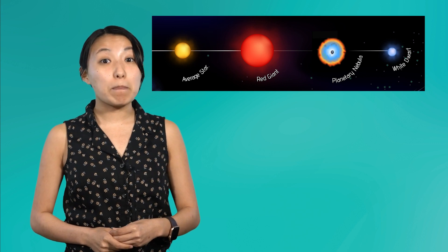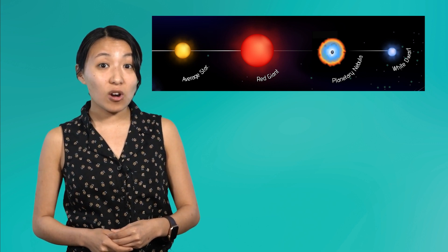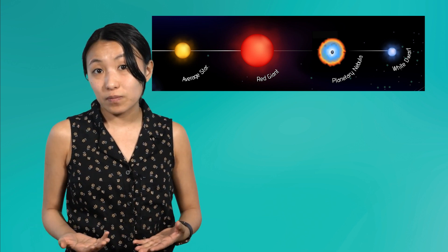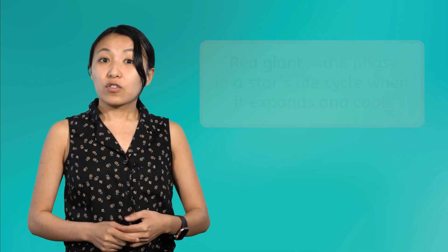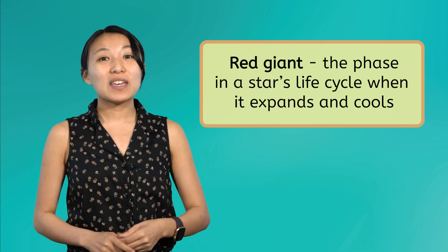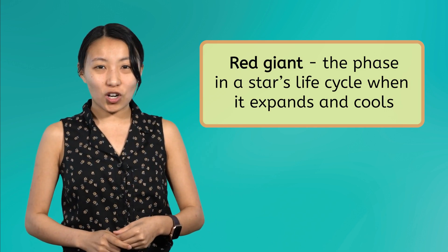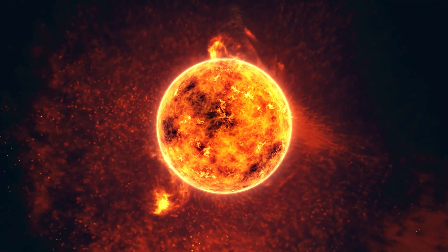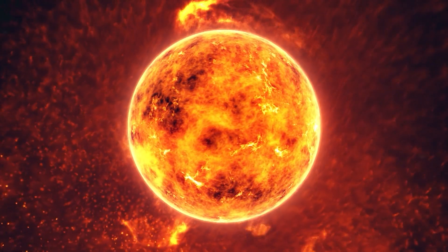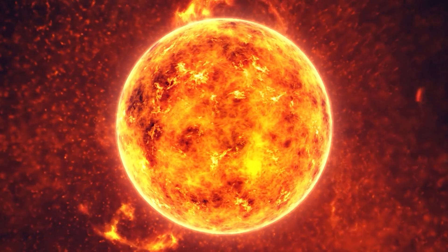Although it takes billions of years these stars will eventually fuse most of their hydrogen and run out of fuel. When this occurs the star will expand and cool down becoming a red giant star. In the red giant phase the star will begin to fuse its helium into heavier elements like carbon and oxygen in its core.